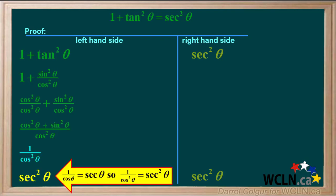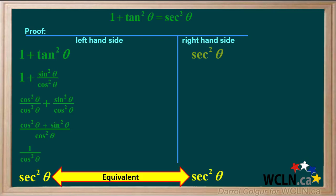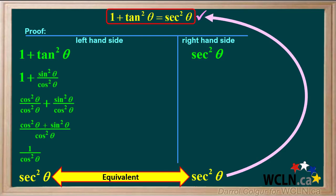1 over cos theta equals secant theta, and squaring both sides gives us 1 over cos squared theta equals secant squared theta. We see the two sides are equivalent, so this proves that 1 plus tan squared theta equals secant squared theta is an identity.